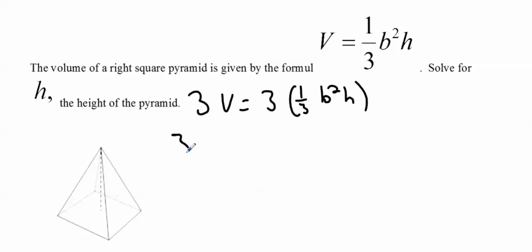So now I have 3V is equal to B squared H. Now what's happening to the letter H? Well, it's being multiplied by B squared. So what I'm going to do is I'm going to divide both sides by B squared. The B squareds on the right go away. So now H is nothing more than 3 times the volume over B squared.